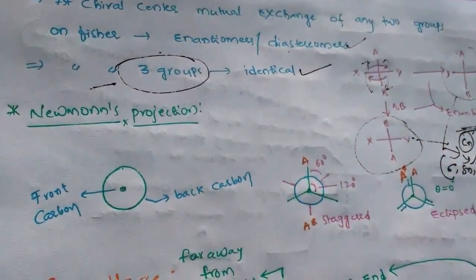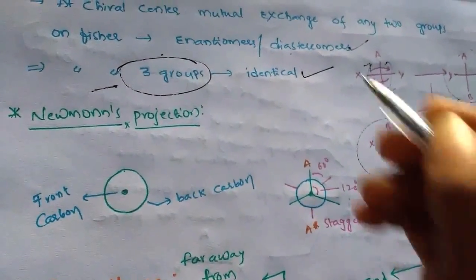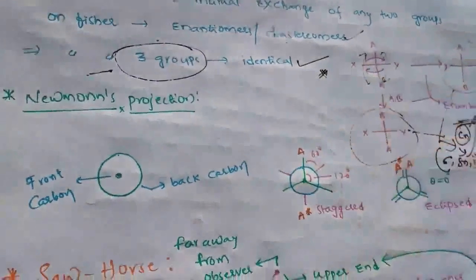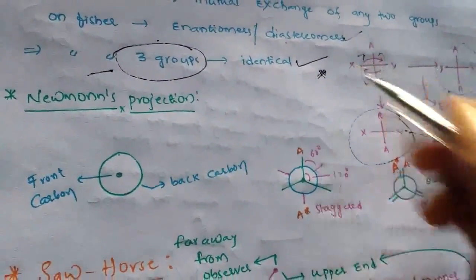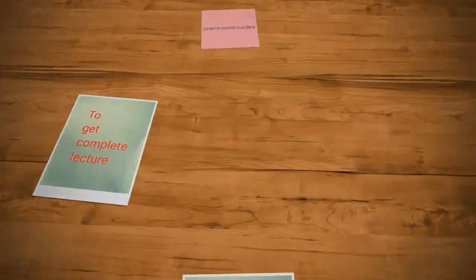At a chiral center, if three groups are mutually exchanged, that produces an identical structure — there is no change in it.